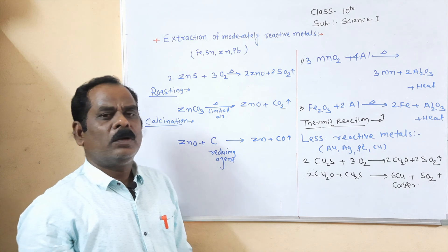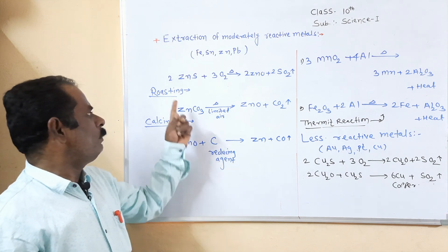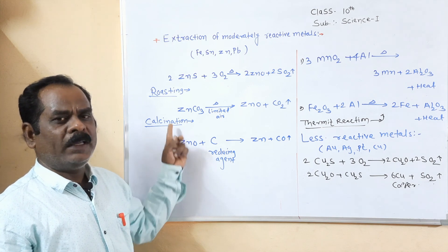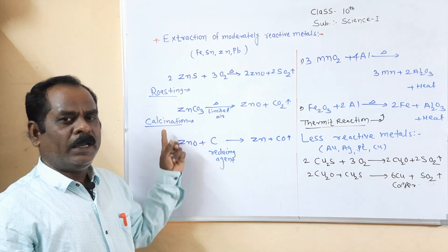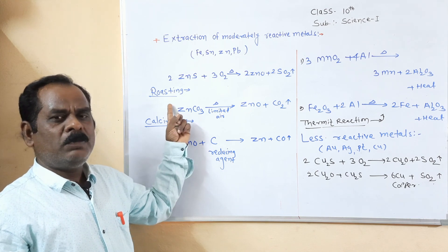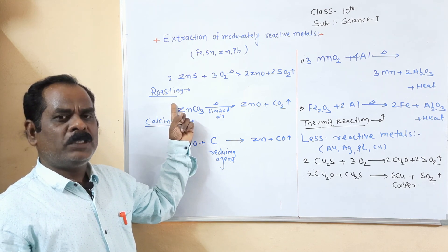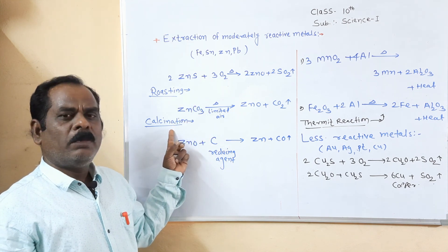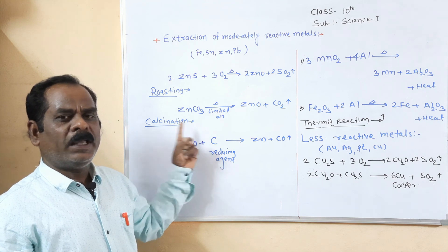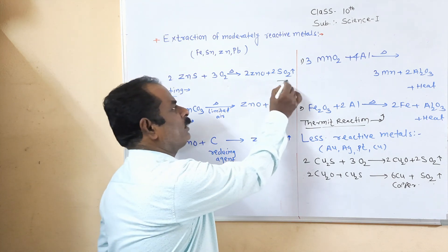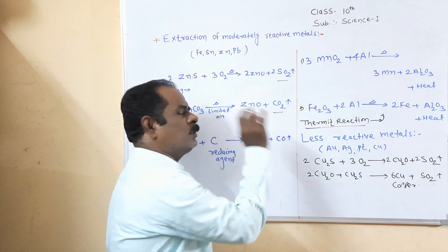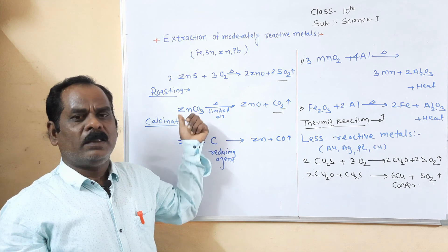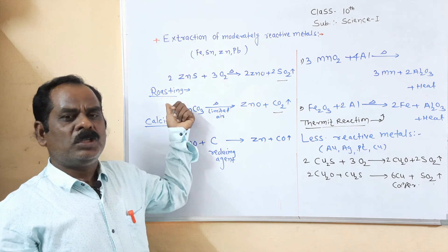A second type of exam question may ask you to distinguish between roasting and calcination. Write 2 to 3 points: first, write the definitions of both. Second, in roasting the sulphide ore is heated in excess of air, while in calcination it is heated in limited air. Third, in the roasting process sulphur dioxide gas is evolved, while in the calcination process carbon dioxide gas is evolved. Thank you.